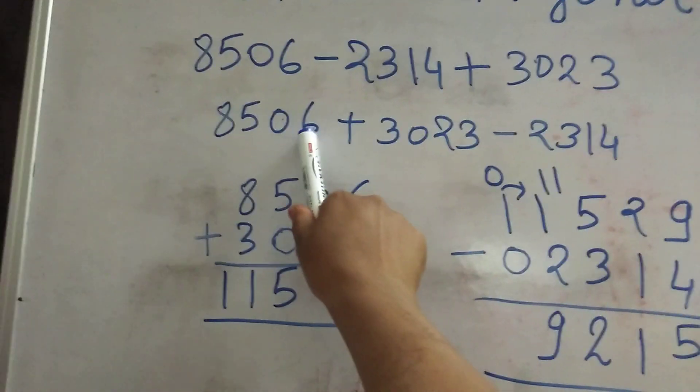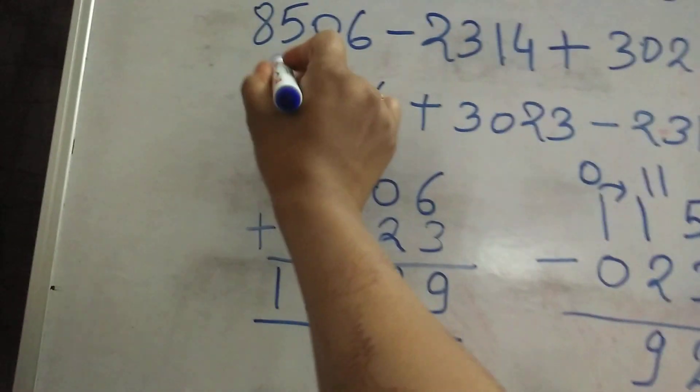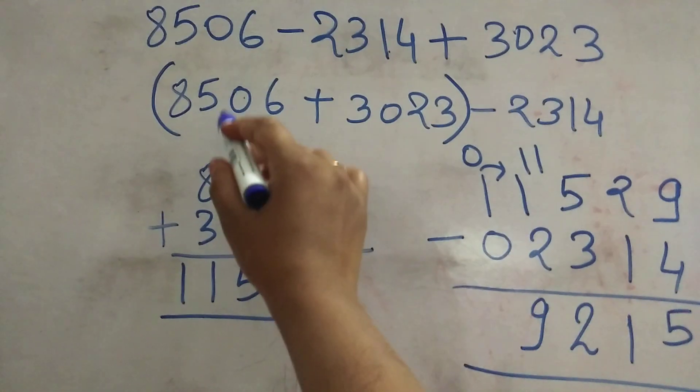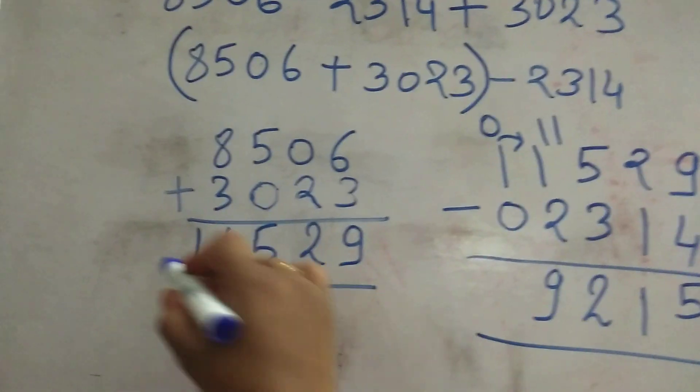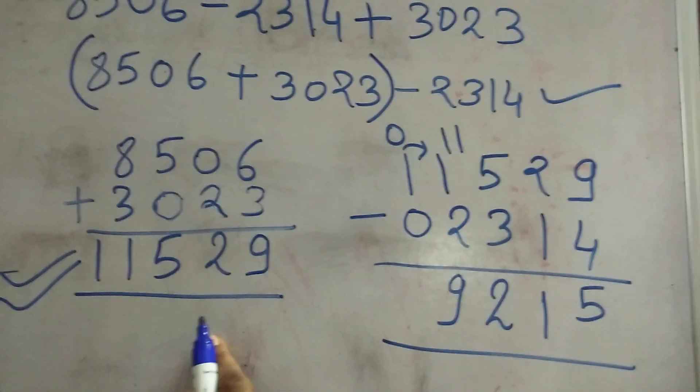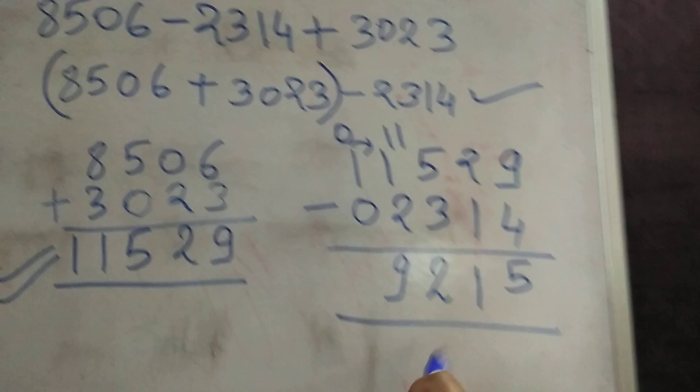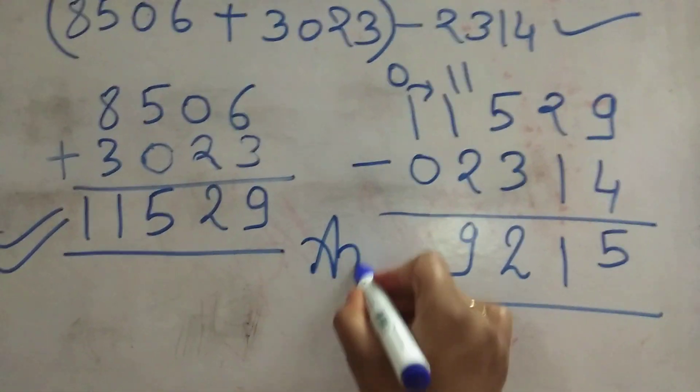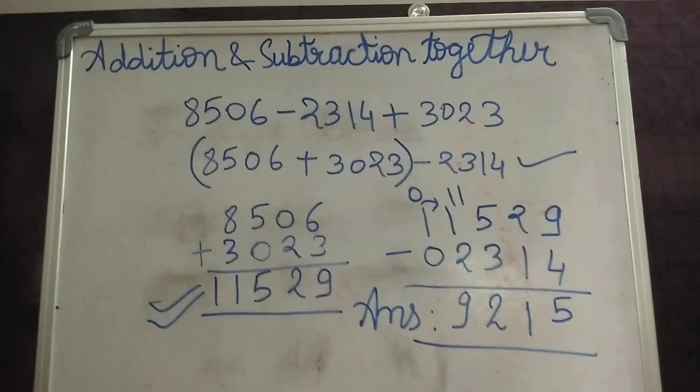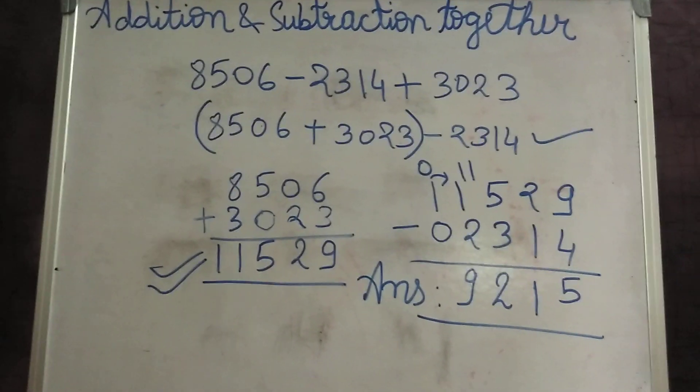We can put a bracket here. And then when we add these numbers, we get the sum, and this number will be subtracted from this sum. This is how we will get the final answer: 9,215. Thank you.